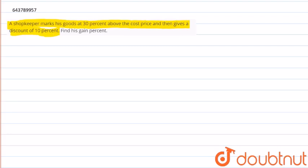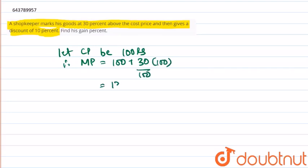For this, let the cost price be 100 rupees. Therefore, we get that marked price equal to 100 plus 30 percent of the cost price, equal to 130 rupees.